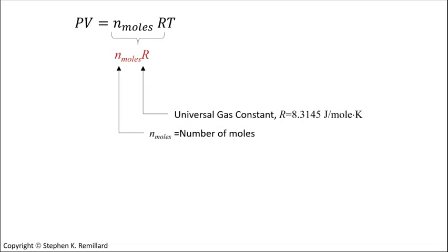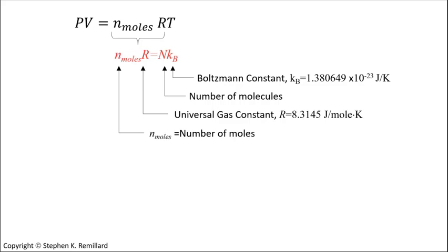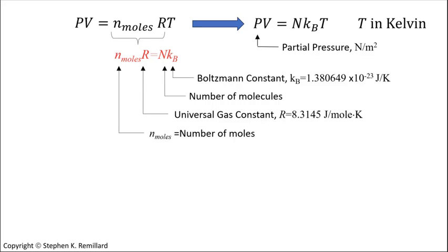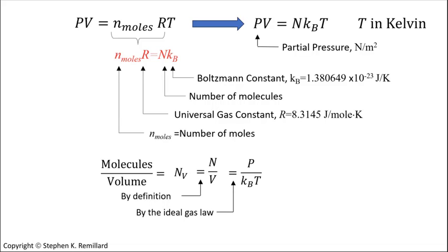The number of moles times the universal gas constant is the number of molecules times the Boltzmann constant. That's baked right into these two fundamental constants. So then let's use this expression of the ideal gas law. N sub v is big N over volume, and the ideal gas law tells us that the number of molecules over volume is also p over kT.